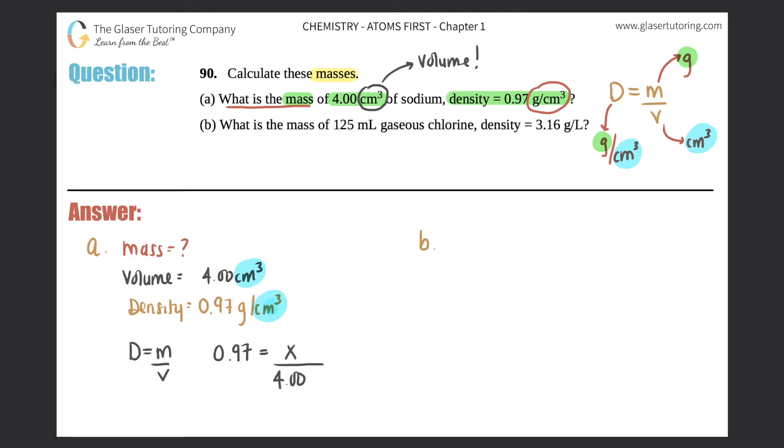This is a cross multiplication, right? You basically have two ratios equaling each other. Because remember, this is over one. So cross multiply and solve. You get X equals 0.97 times four. So you get 3.88, but now we just need the correct sig figs. So 3.88.